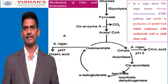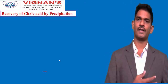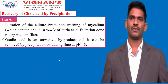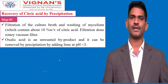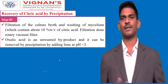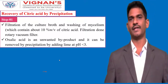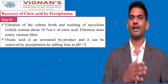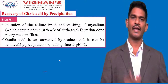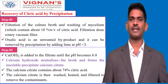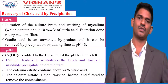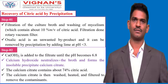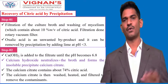Once fermentation is completed, citric acid is recovered using different methods. In the precipitation process, the first step is filtration to separate culture growth. The mycelium, which contains 10% citric acid, is washed and filtered using rotary vacuum filters. Unwanted by-products like oxalic acid are removed by precipitation at pH 3. Calcium hydroxide is then added to the filtrate until the pH reaches 6.8, neutralizing the broth and forming an insoluble precipitate of calcium citrate, which contains about 74% citric acid.